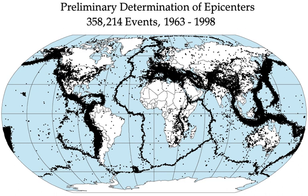The word tremor is also used for non-earthquake seismic rumbling. At the Earth's surface, earthquakes manifest themselves by shaking and displacing or disrupting the ground. When the epicenter of a large earthquake is located offshore, the seabed may be displaced sufficiently to cause a tsunami. Earthquakes can also trigger landslides and occasionally volcanic activity. In its most general sense, the word earthquake is used to describe any seismic event — whether natural or caused by humans — that generates seismic waves.